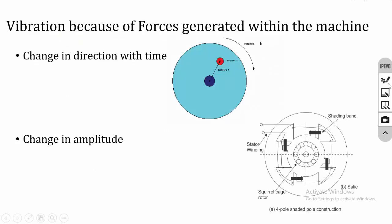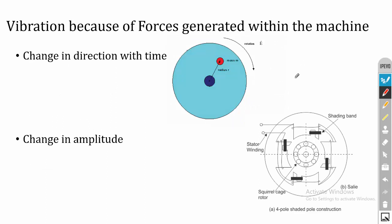The first source is vibration because of forces generated within the machine. Vibration is generated because of internal forces inside the machine. There are different types of internal forces. The first one is change in direction with respect to time. The perfect example for change in direction with respect to time is an unbalanced system.